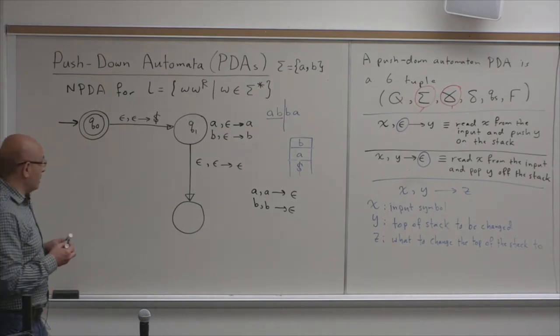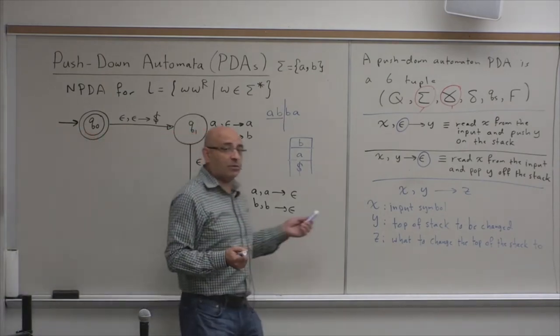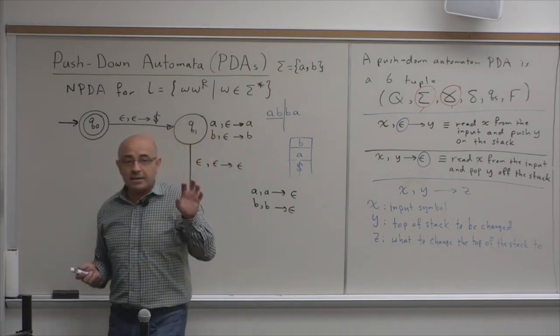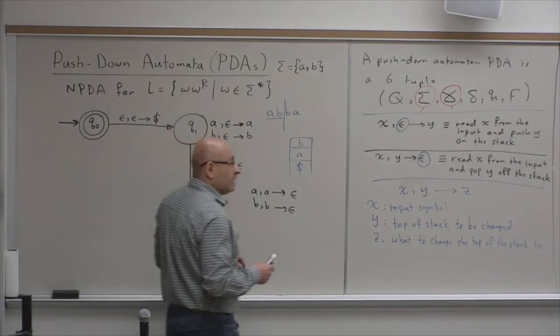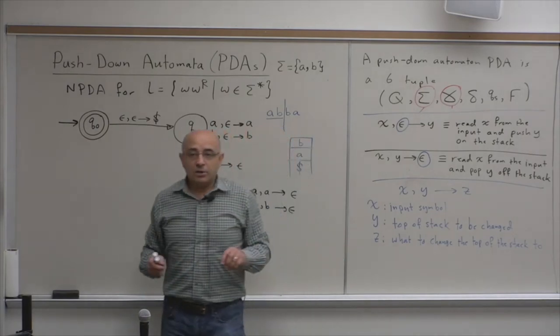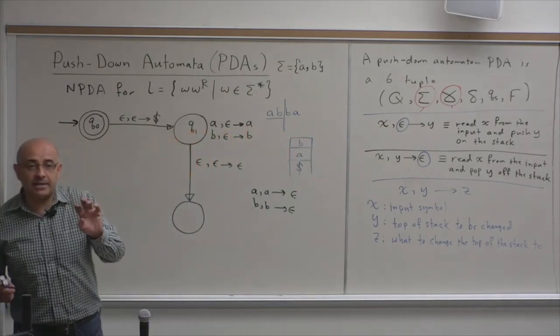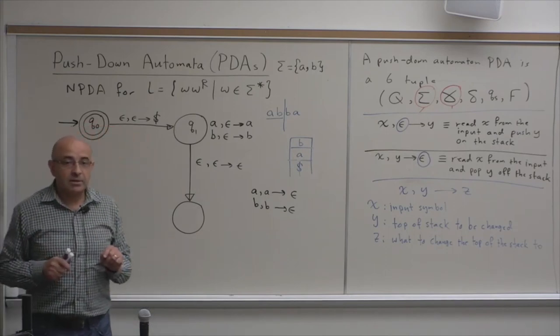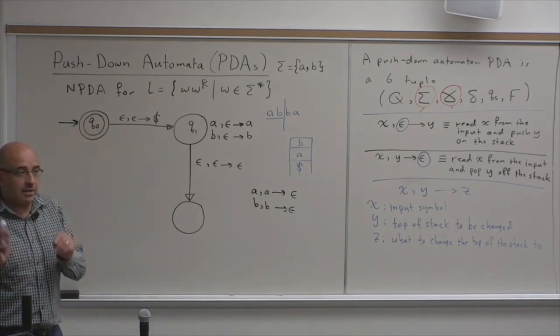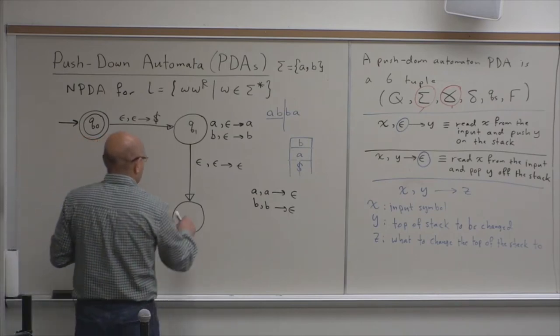And like I said, in non-deterministic finite automata, we take the epsilon transition when it's good for us to take the epsilon transition. It's like, you are trying to get that string to get accepted. So, you choose to take the epsilon transition when it's a good time to take the epsilon transition so that this string gets accepted.